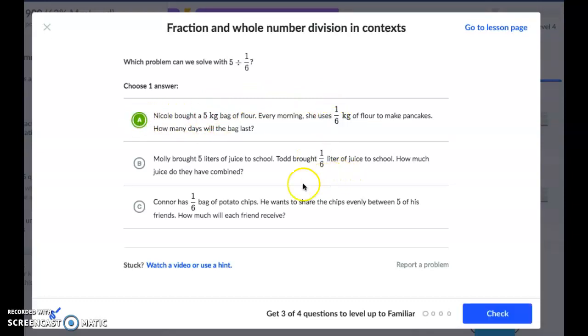But let's double check. Molly brought 5 liters of juice to school. Todd brought 1 sixth of a liter of juice to school. How much do they have combined? In this problem, we would be adding these two amounts.